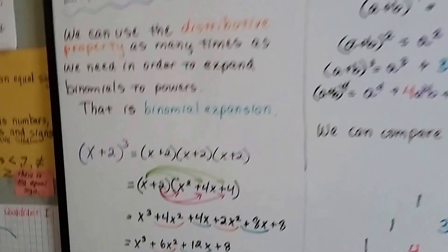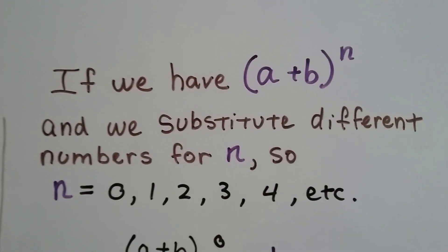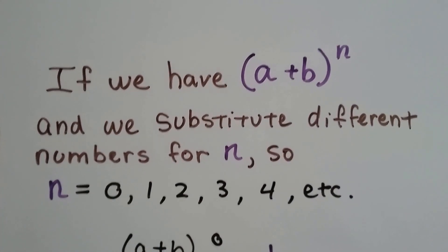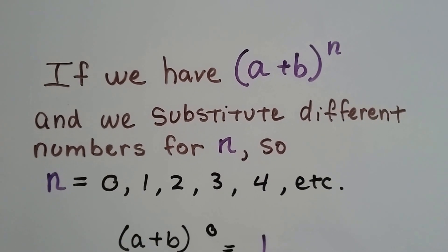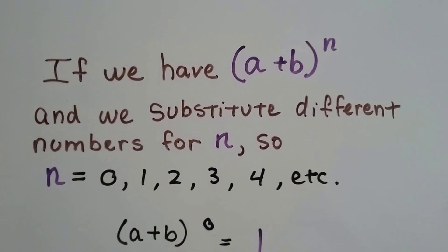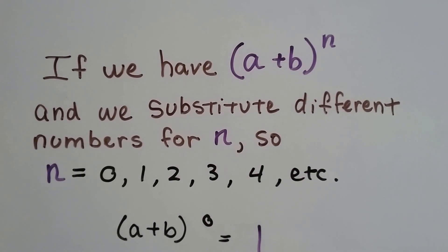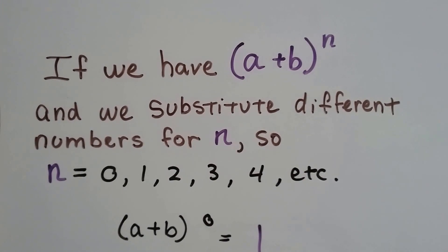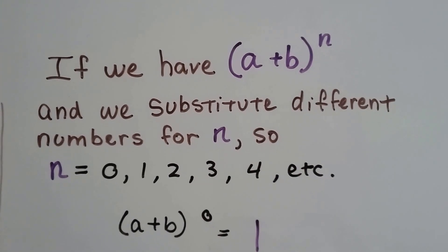Well, if we have a plus b to the n power, and that n means we don't know what it is, and we substitute different numbers for n, so the exponent n could be 0, 1, 2, 3, 4, etc.